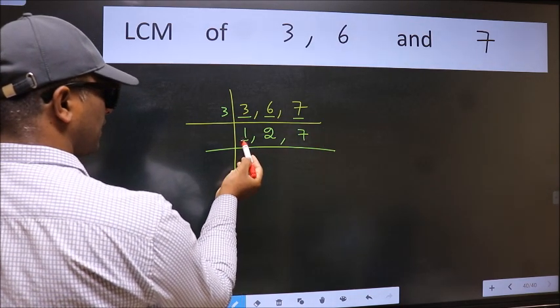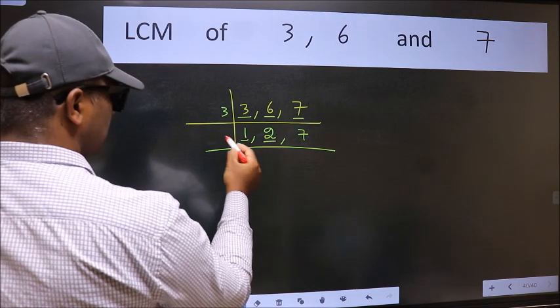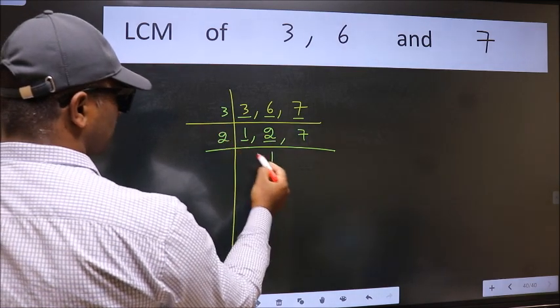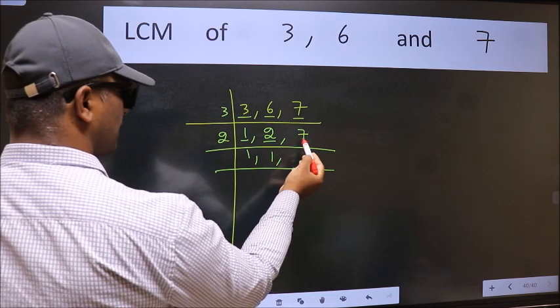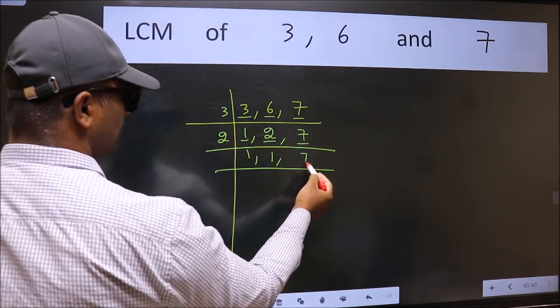Now we got 1 here. So focus on the next number 2. 2 is a prime number, so 2 divides 2. The other number 7 is not divisible by 2, so we write it down as it is.